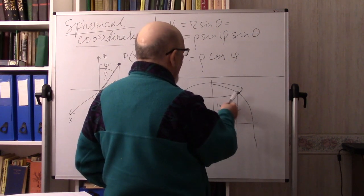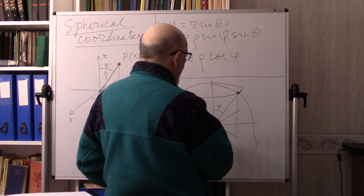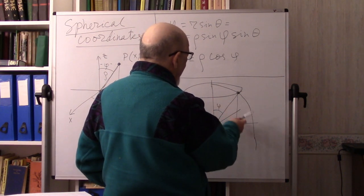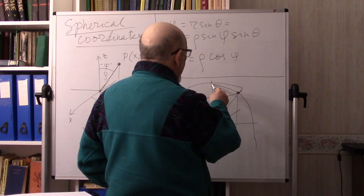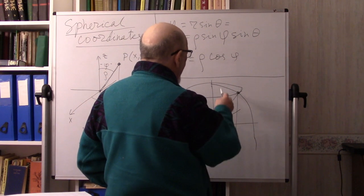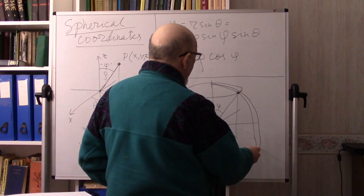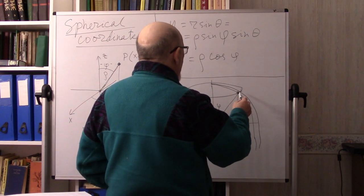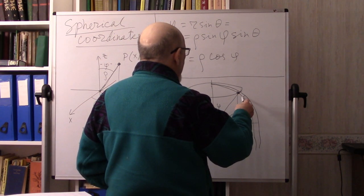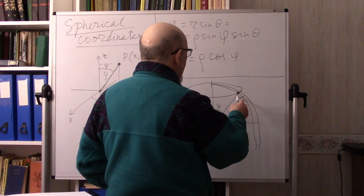When ρ and φ are fixed and only φ is changing, it describes a circle. If we replace θ by θ + dθ, we have this new arc. If φ changes to φ + dφ, we get another arc; and from ρ to ρ + dρ gives yet another dimension.